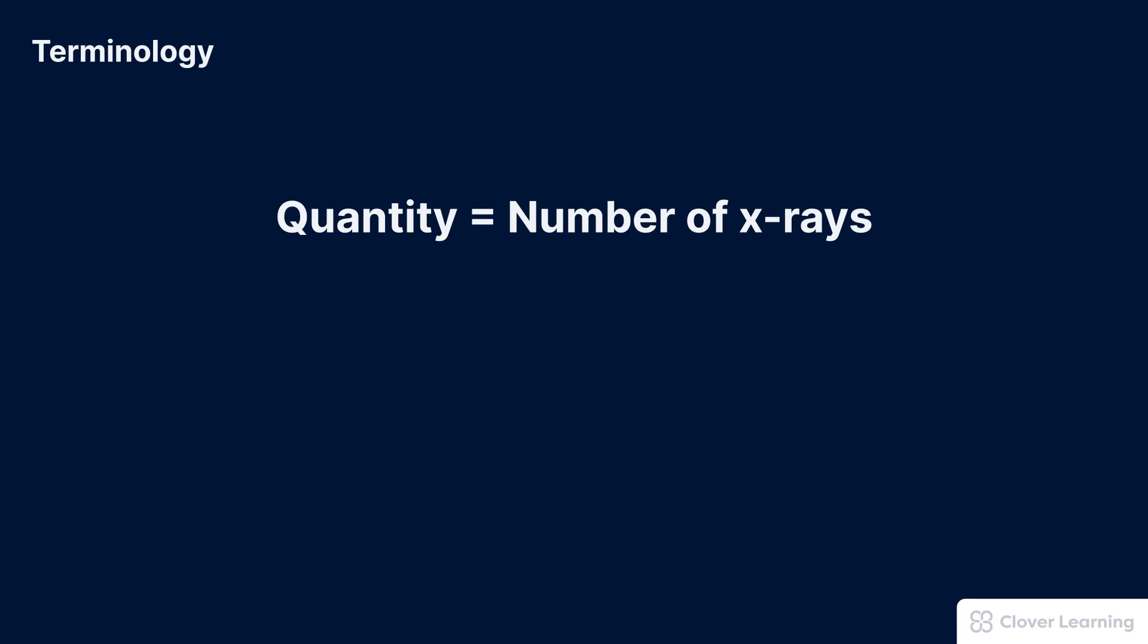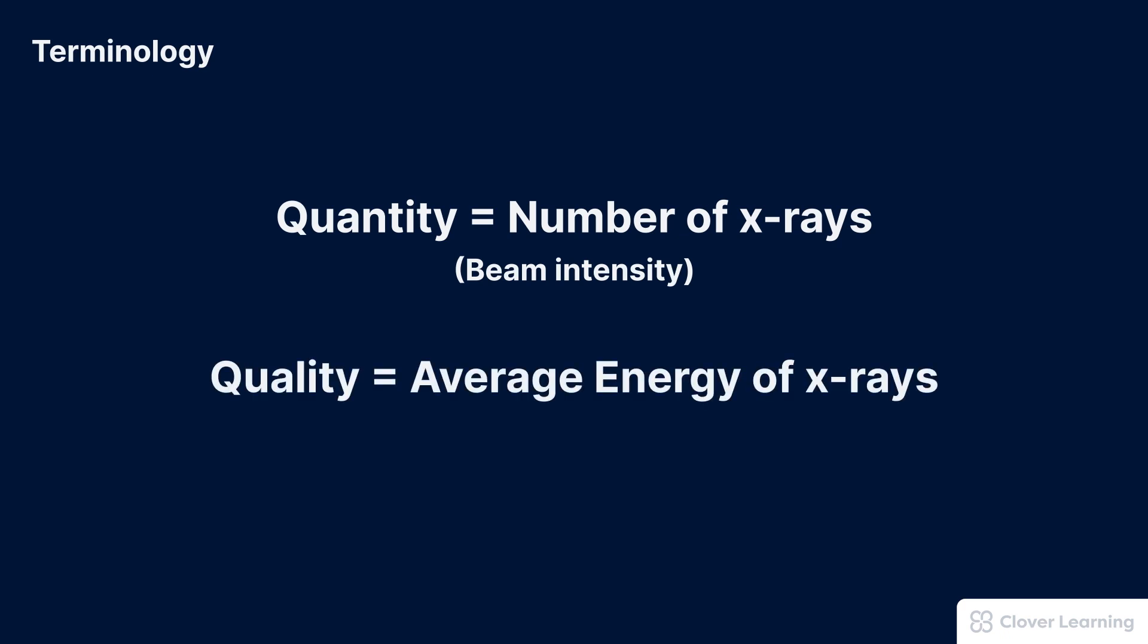The term quantity in the context of x-ray physics refers to the total number of x-rays in the beam. We sometimes call this the beam intensity. Quality is a term that refers to the average energy of the x-ray beam. Sometimes we just call this energy. The terms quantity and quality are also discussed in greater detail in other lessons.